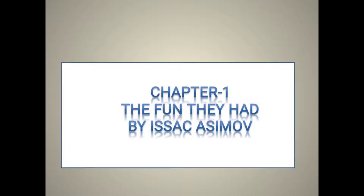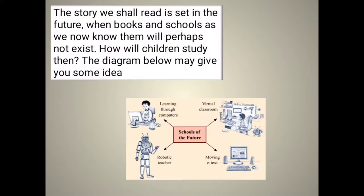A short introduction: this story is a science fiction story with a background setting of 2157 in the future. It is a comparative study of school in the present and school in the future. The whole story is set in the future where there are no schools and no books. The story is written in the form of a diary by a sweet little girl named Margie.